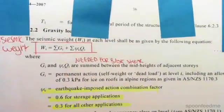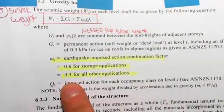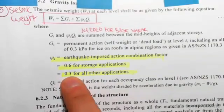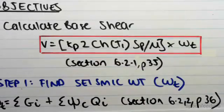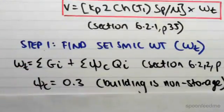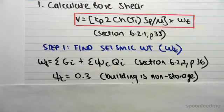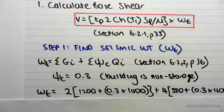First, we'll say ψc is 0.3 because our building is non-storage, as stated in the question. Then we'll find the seismic weight on each floor.